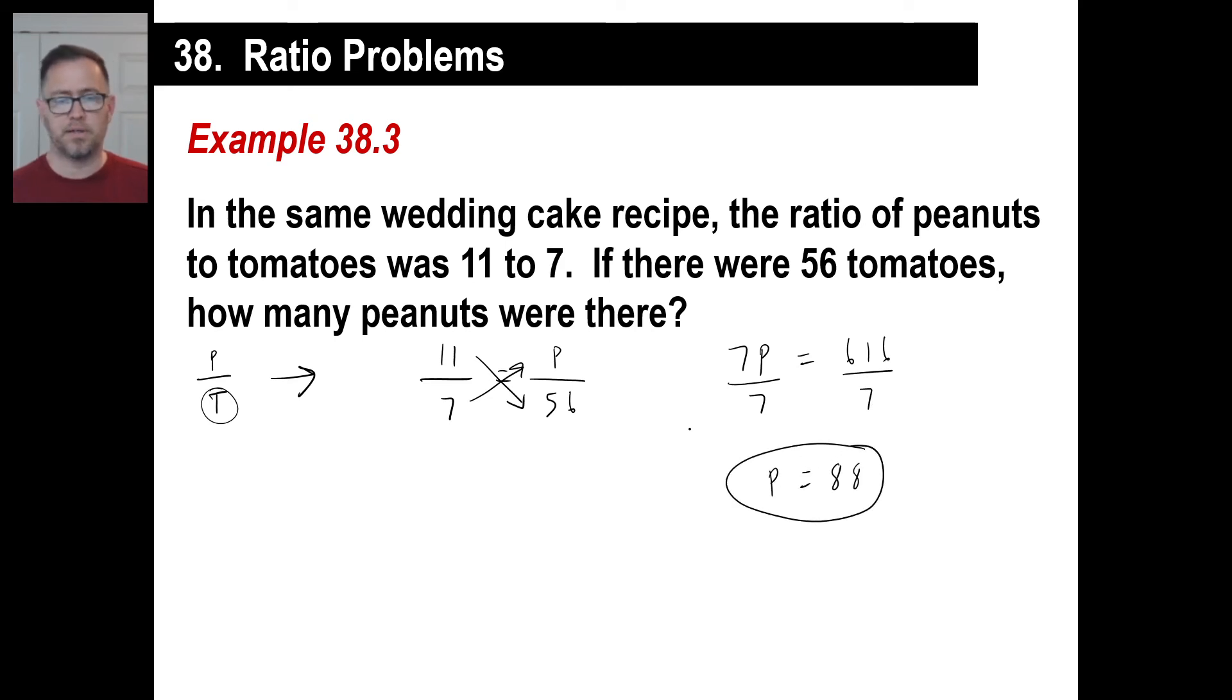By the way, another quick trick. If you see that 7 is your first ratio and you end up with 56, you know you're going to be multiplying by 8. 7 times 8 is 56. So you can go, okay, well since that's multiplied by 8, I have 11 times 8. That's going to be P. 11 times 8 is 88.